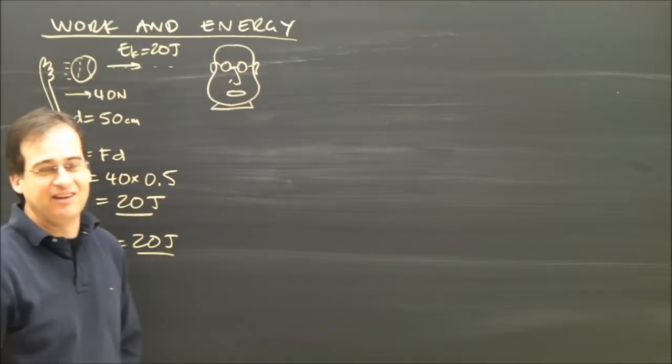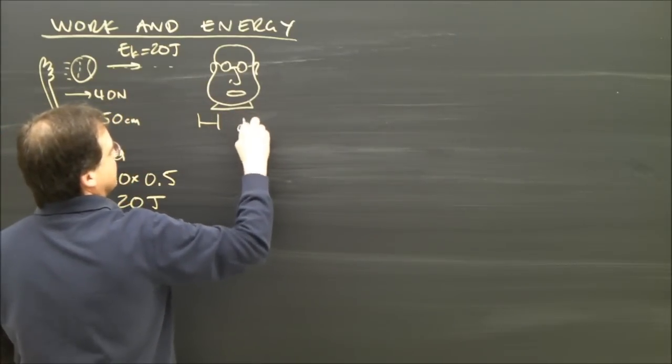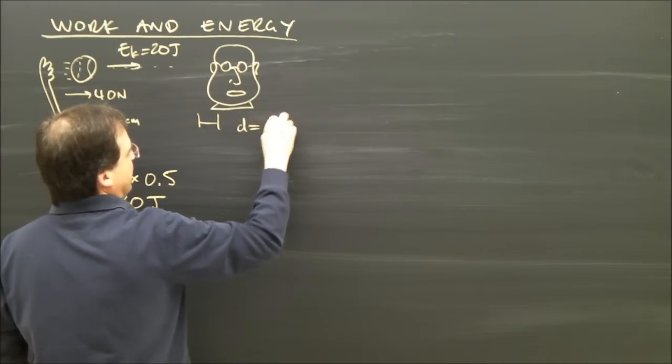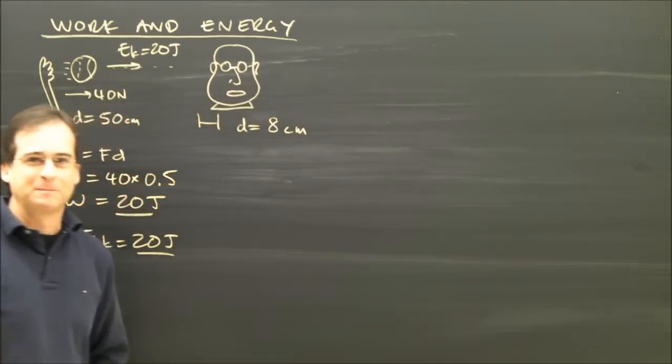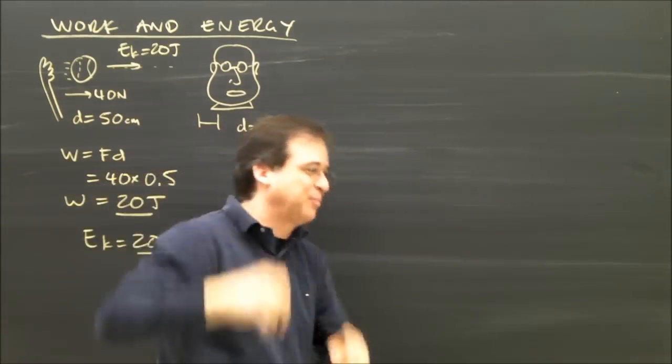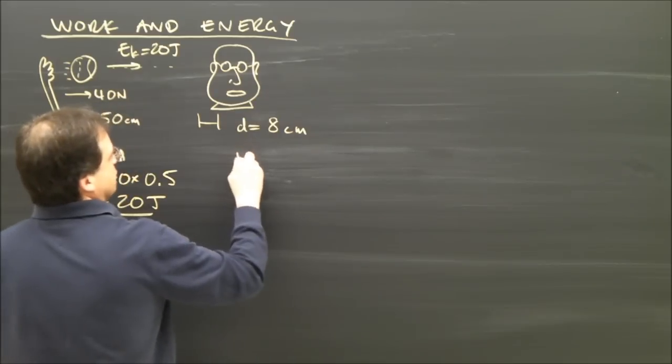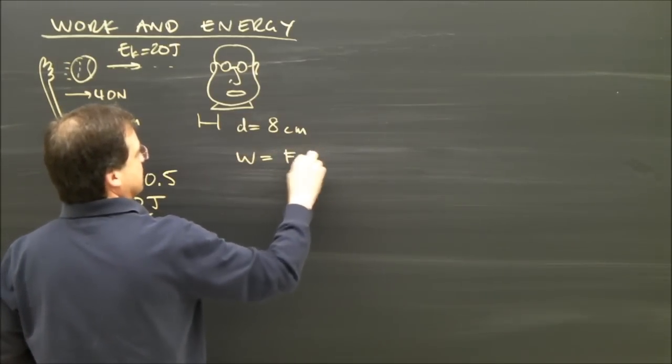Let's say it hits the person in the head and their head moves a distance of 8 centimeters. That means your head is going to have to apply a force to stop it from moving. So that 20 joules is going to get turned into work.